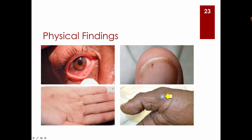Physical findings in endocarditis include conjunctival hemorrhages, splinter hemorrhages under the fingernails, Osler's nodes, and Janeway lesions. However, these findings alone are not highly reliable predictors — the instructor notes having splinter hemorrhages personally without having endocarditis. They are part of the overall clinical picture.